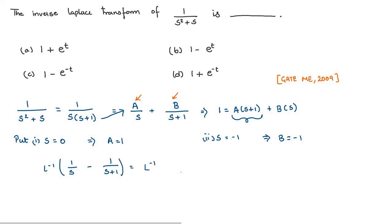Calculating the inverse Laplace of each term: inverse Laplace of 1/s minus inverse Laplace of 1/(s+1). We get inverse Laplace of 1/s = 1 and inverse Laplace of 1/(s+1) = e to the power of −t. So the answer is 1 − e^(−t).